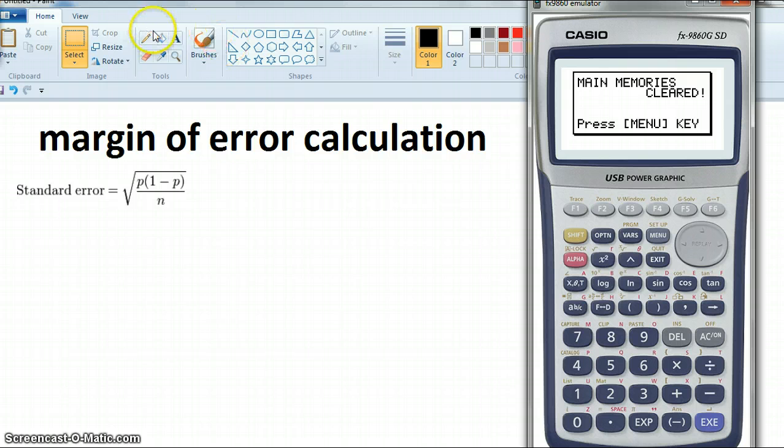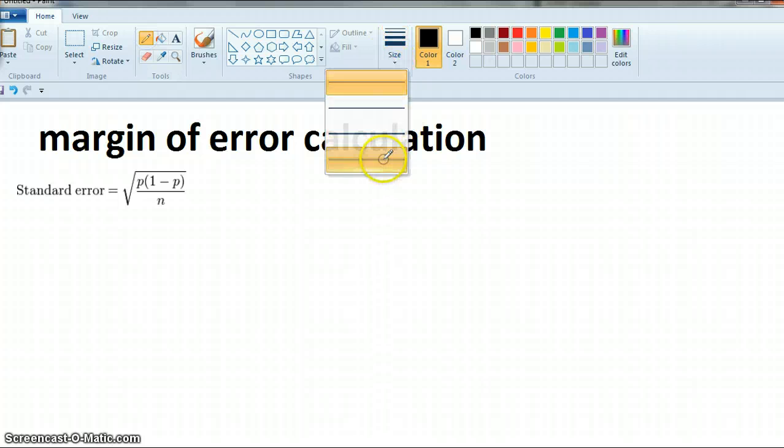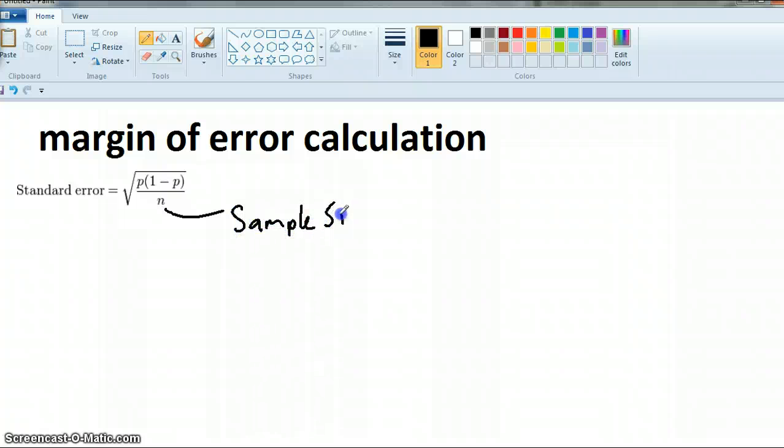Now, n is going to be the number of people in the sample, so sample size. And p is the proportion.